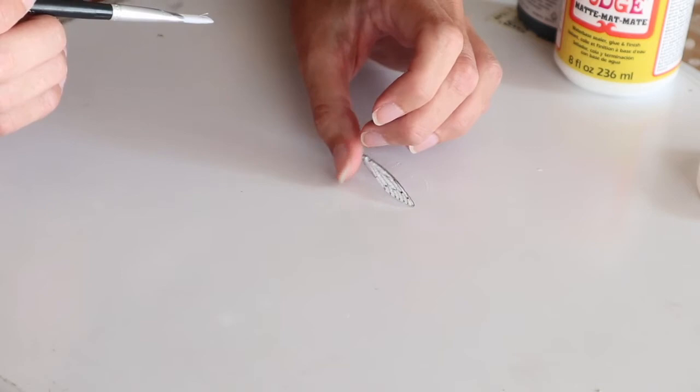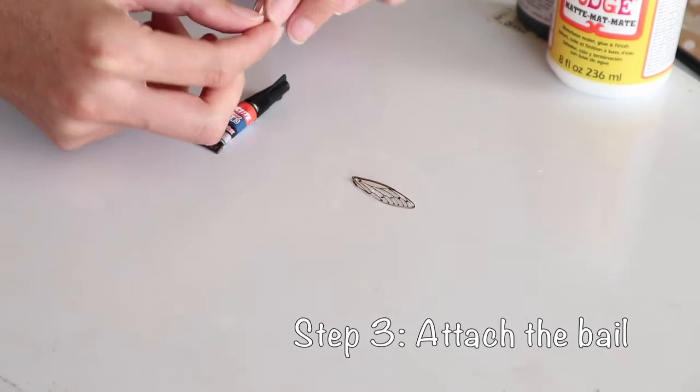On the next step, we're going to attach a jump ring to the wing. This way we can turn it into a beautiful pendant.